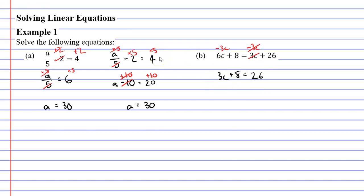Let's subtract 8 on both sides of the equal sign to cancel out that plus 8. That's going to leave us with 3C on the left, and 26 minus 8 is 18. Because this is 3 times C, we're going to perform the opposite operation and divide every term by 3. This will cancel out the 3, leaving us with just C. And 18 divided by 3 is 6.